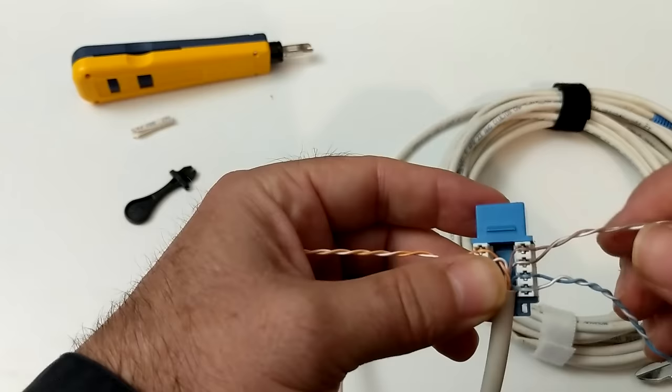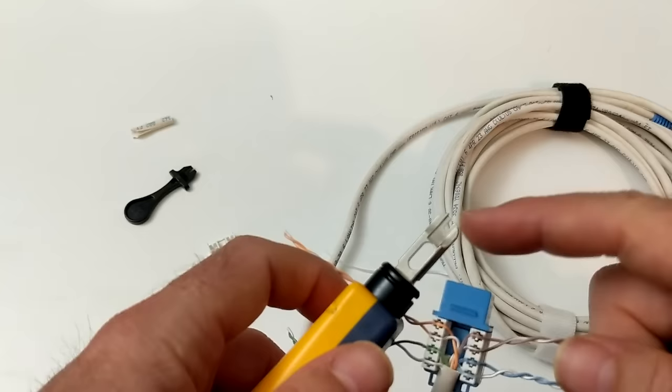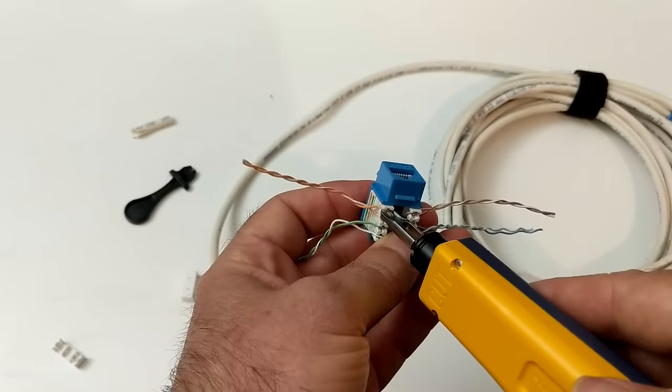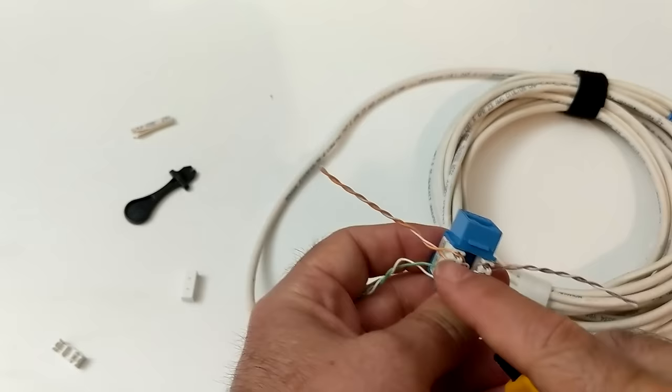The termination tool is referred to as a 110 punch down tool or impact tool. You see this little blade on here? There's a shorter side and a longer side. The shorter side is the non-cut and the longer side is the cut side. This is designed to fit right down into these little slots. I want the shorter side on the inside and the longer side on the outside because when I push down it's going to force that wire into some metal teeth down there and then this longer side is actually going to cut the excess wire off.